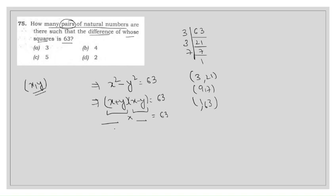First, we take 21 and 3. x+y = 21 and x-y = 3, since 21 is the greater number. Solving by equations, we get the two numbers as 12 and 9. Their difference is 3 and their sum is 21. So one possible pair (x, y) is (12, 9).